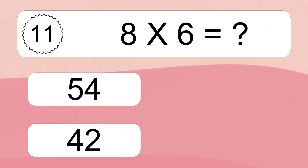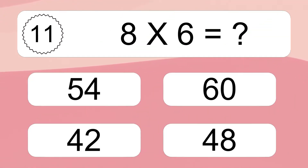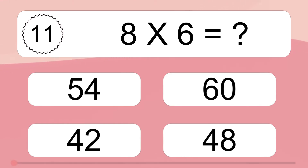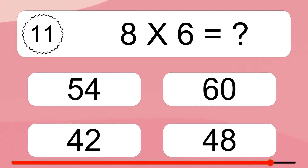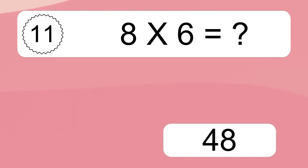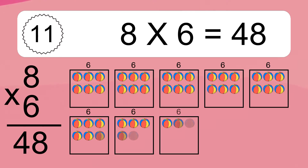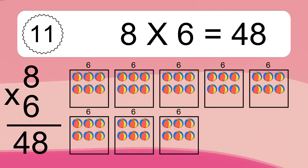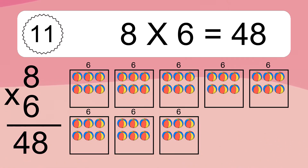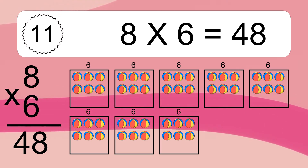8 times 6 equals what? 8 times 6 equals 48. We have 8 boxes, and each box has 6 colorful balls inside. If you count all the balls in all the boxes together, you will have 8 times 6 balls. This equals 48 balls.